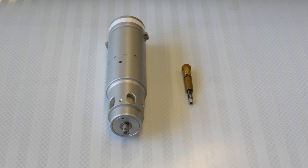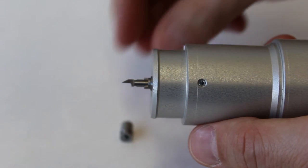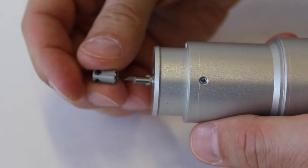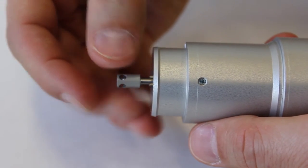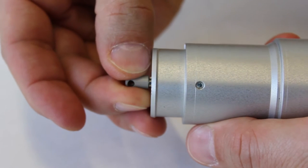For tougher vinyls, such as diamond grade, we recommend using the yellow spring and the light shoe. Slide the light shoe over the blade and screw it onto the KCT until the tip of the blade becomes clearly visible.